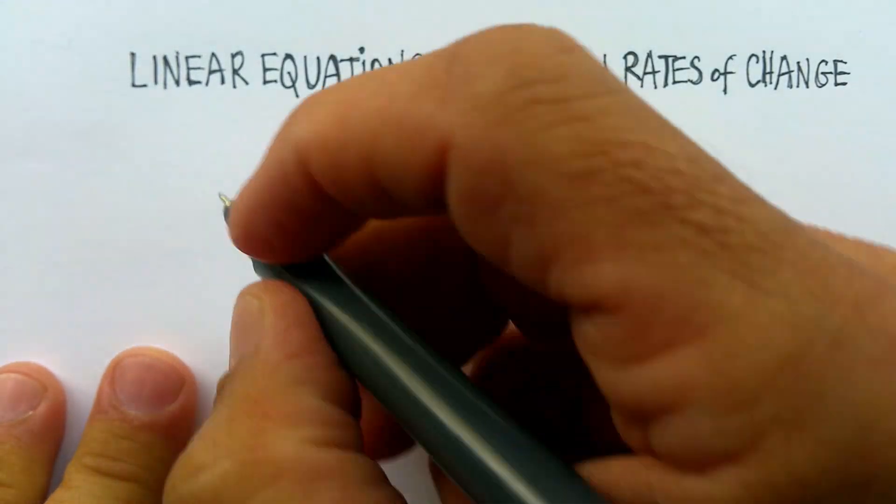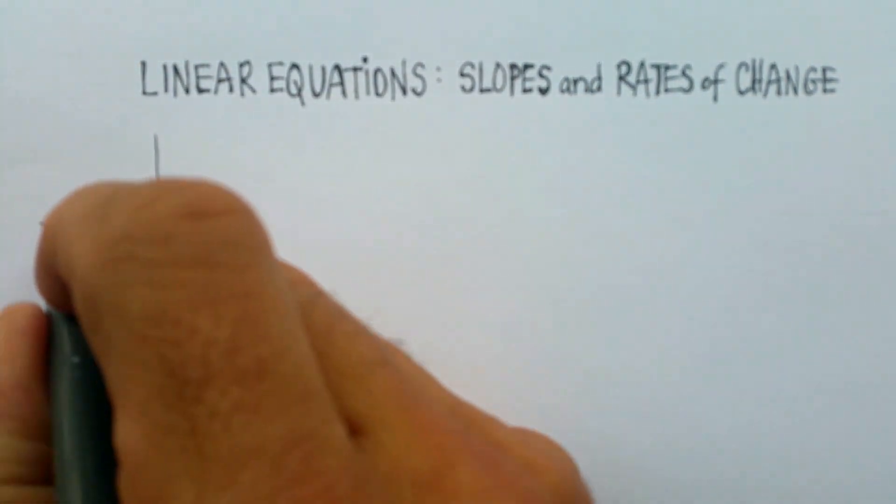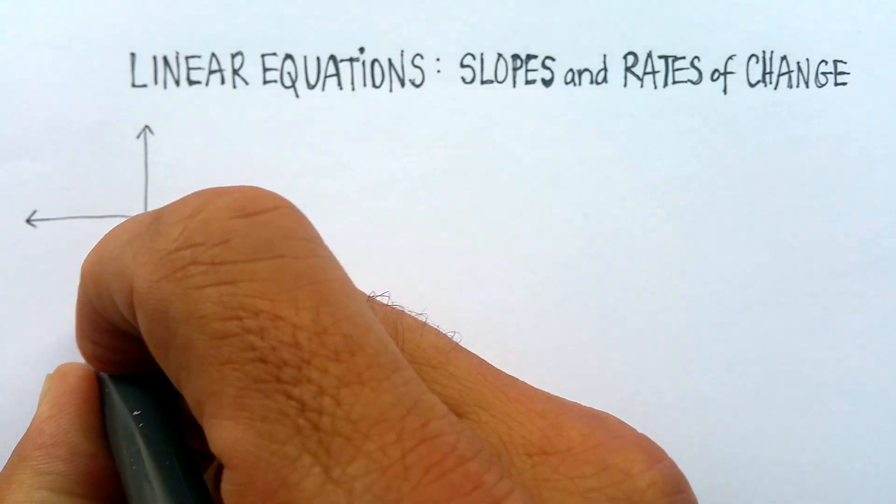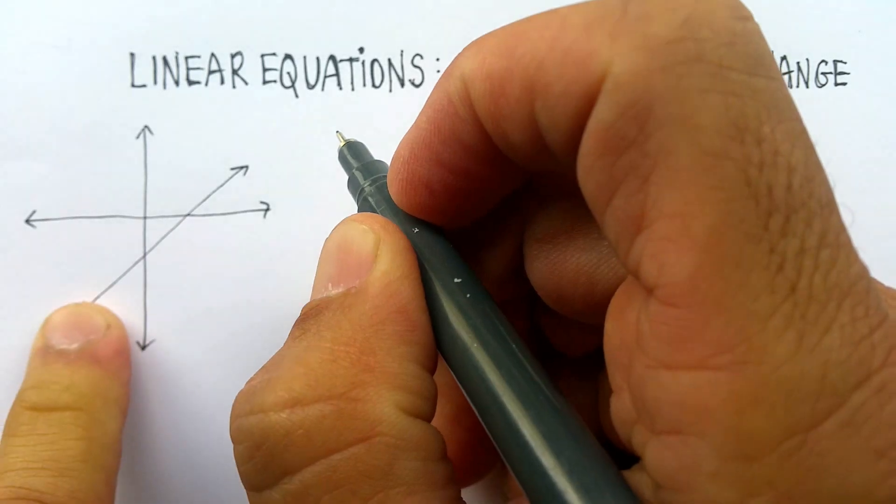Let me give you an example. We know how to find the slope. So if we have a line, let me just go ahead and do a quick xy-axis, and if we have a line that looks something like this, we know it's a positive line because it's going upward from left to right.